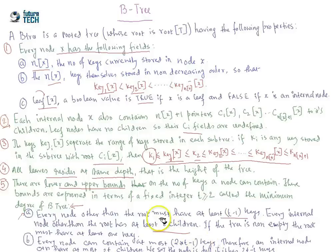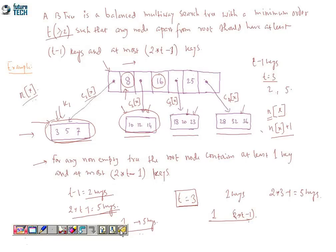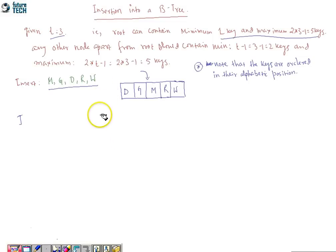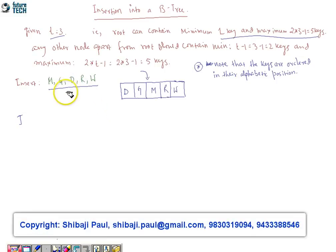Now let us understand how to insert into a B-tree, and then how to delete a key. We are given T equals three, which means a node apart from root can contain a minimum of two keys and a maximum of five keys, and the root can contain a minimum of one and a maximum of five. After inserting M, G, T, R, W, this root node is full and cannot accommodate any other key.